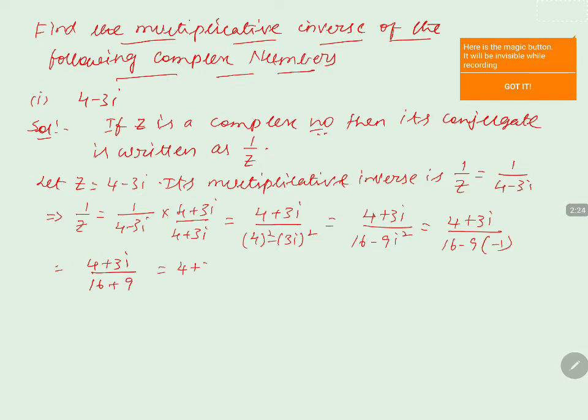That can be written as 4 plus 3i by 16 plus 9, which can be written as 25. Now when we separate the numerator, we will get it as 4 by 25, which we will keep in one bracket, plus the other one is 3 by 25 into i.